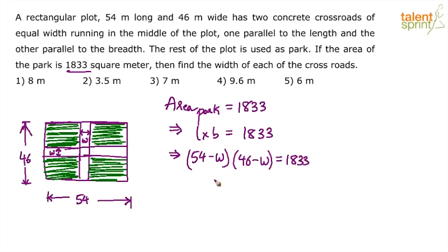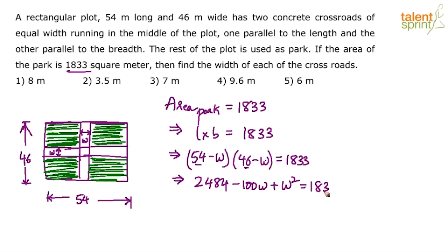This gives a quadratic equation. If you don't want to solve it algebraically, substitute the answer options one by one. Expanding: 54 × 46 = (50+4)(50−4) = 2500 − 16 = 2484. Then 2484 − 46w − 54w + w² = 1833, which simplifies to w² − 100w + 651 = 0.